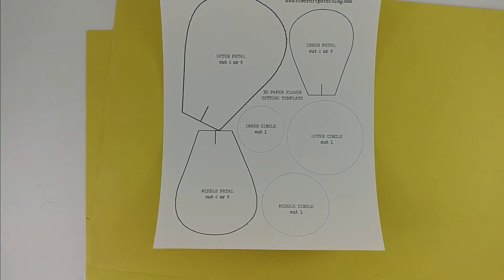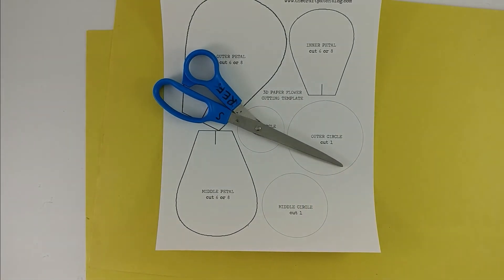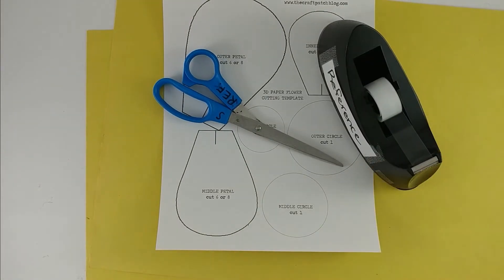To make our roses we're going to need two pieces of construction paper, a template, scissors, and tape or your choice of glue.